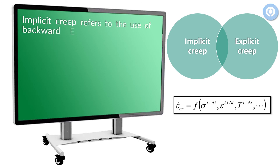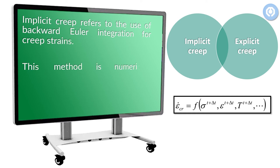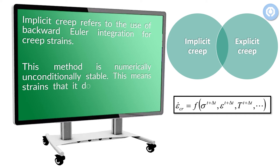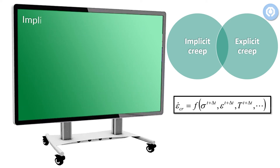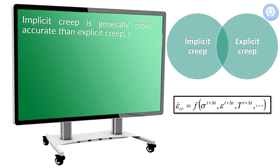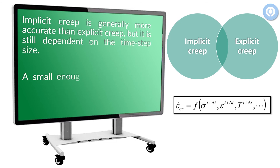Implicit creep refers to the use of backward Euler integration for creep strains. This method is numerically unconditionally stable, meaning it does not require as small a time step as the explicit creep method, so it is much faster. Implicit creep is generally more accurate than explicit creep, but it is still dependent on the time step size. A small enough time step must be used to capture the path-dependent behavior accurately.